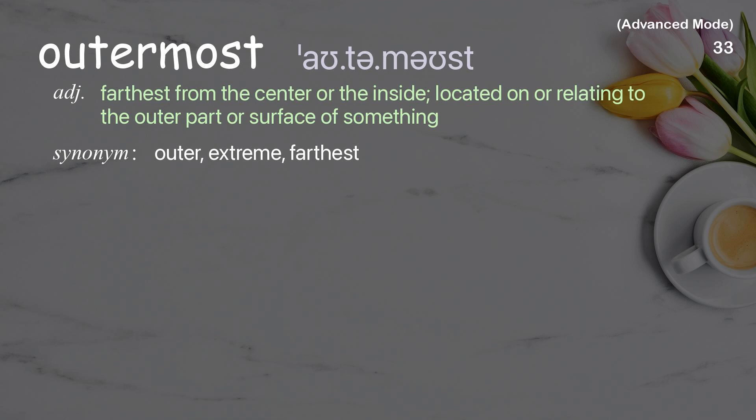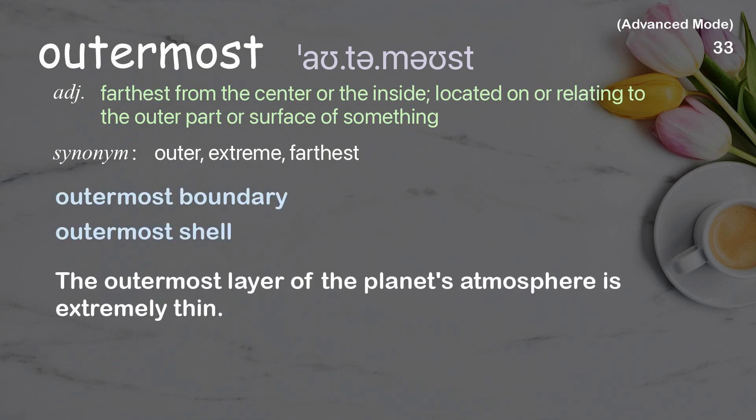Outermost. Farthest from the centre or the inside, located on or relating to the outer part or surface of something. Examples: outermost boundary, outermost shell. The outermost layer of the planet's atmosphere is extremely thin.